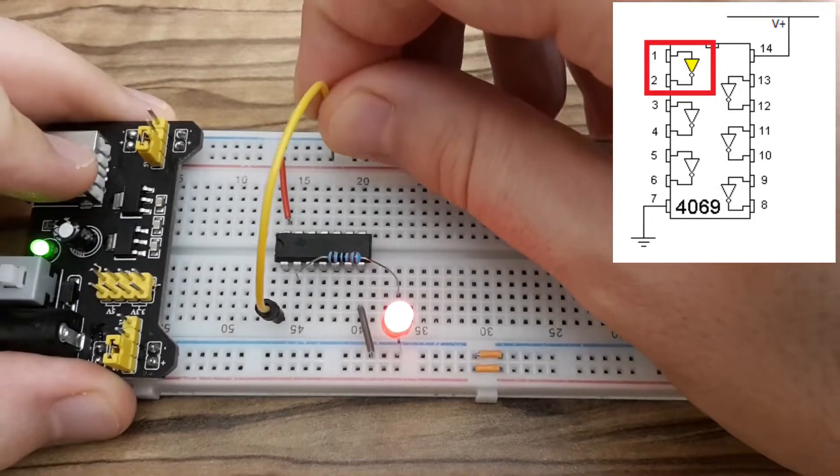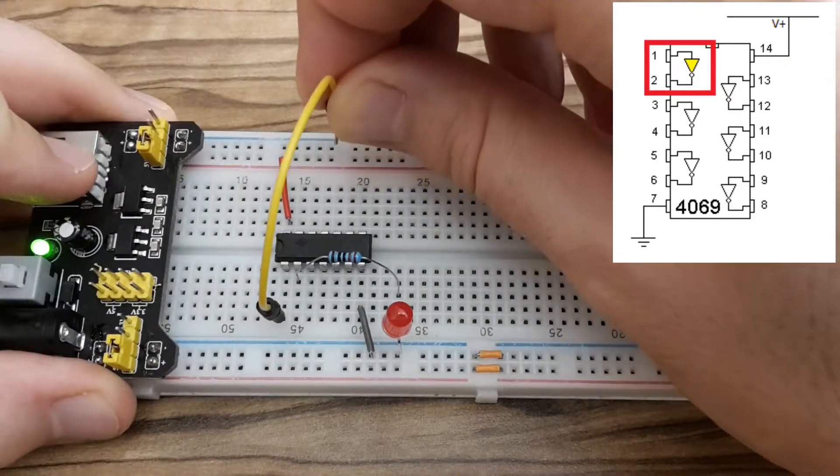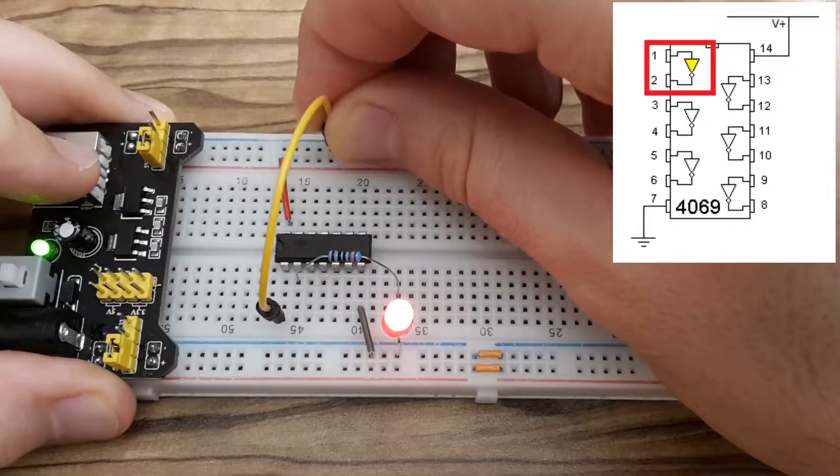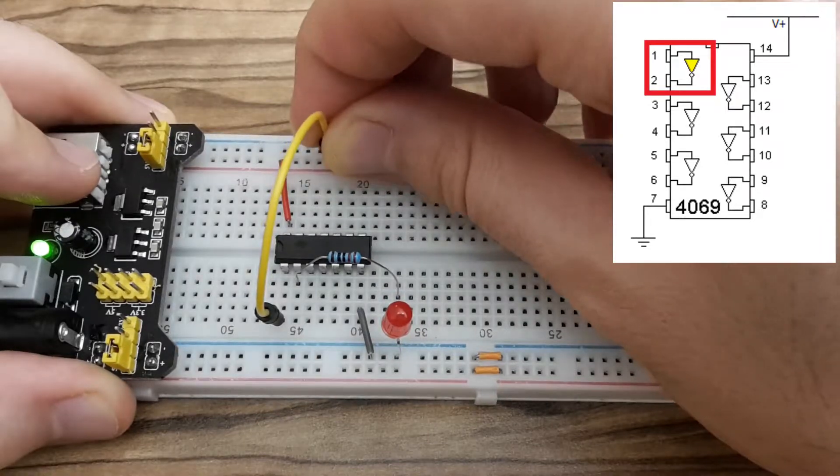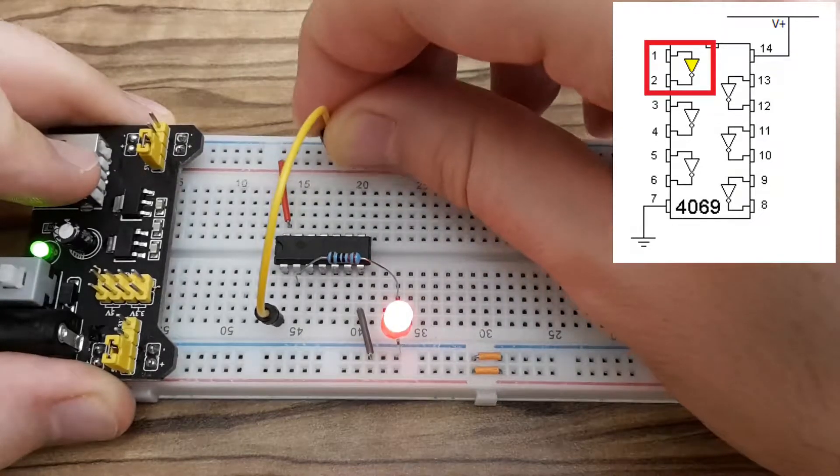And look at it now. I'm toggling between 5 volts and ground. And the LED is behaving the opposite way of the input.